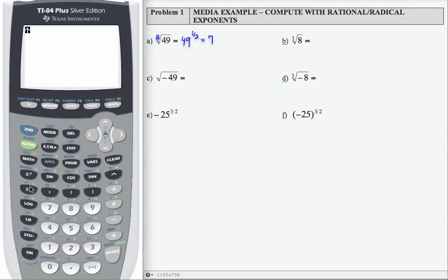So on our calculator, we're looking for the second and then above the x squared, so 49, enter, and that gives us 7.